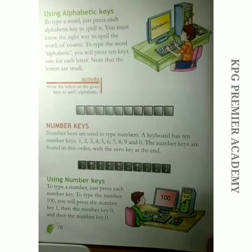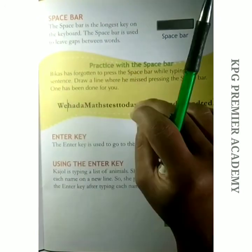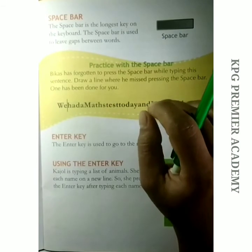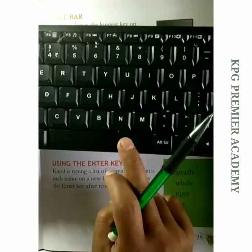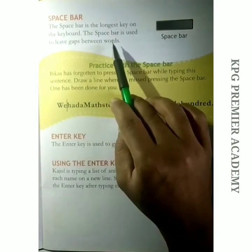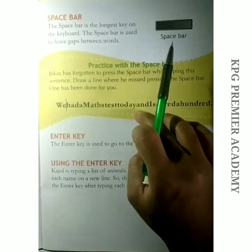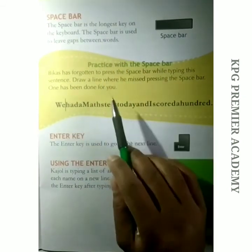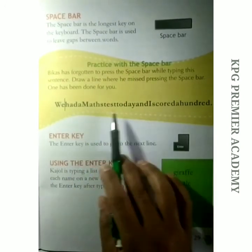Let's go to the next page, page number 29. Space bar. If you look at the keyboard, the longest key is called the space bar. I will show you — this is the longest key and it is called the space bar. The space bar is used to leave gaps between words.